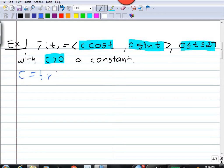so what is the set of values r(t) with t in the interval 0 to 2π? What is this? Well, let's see,